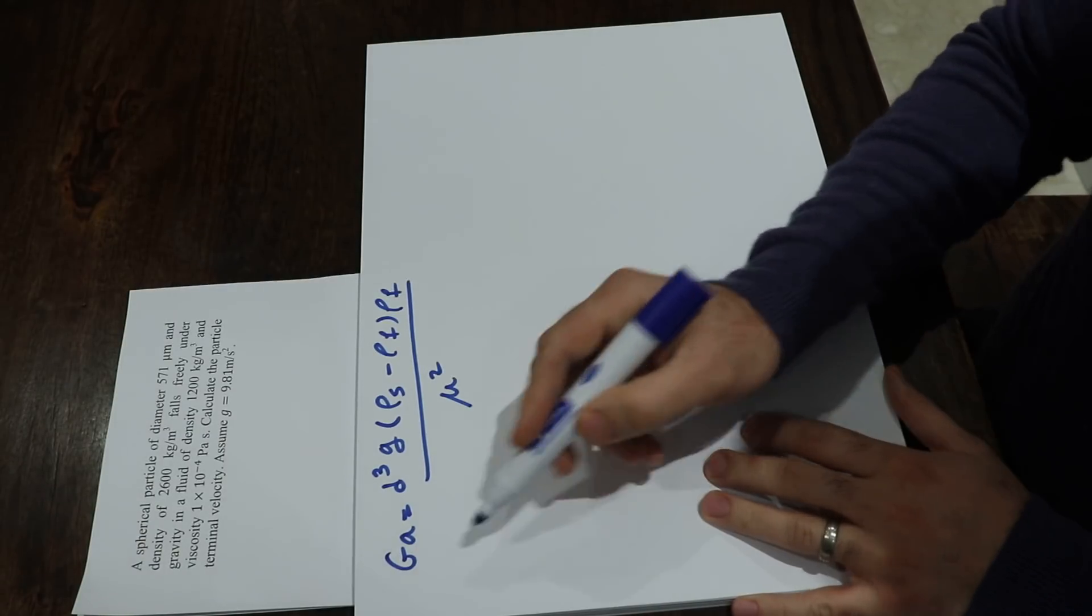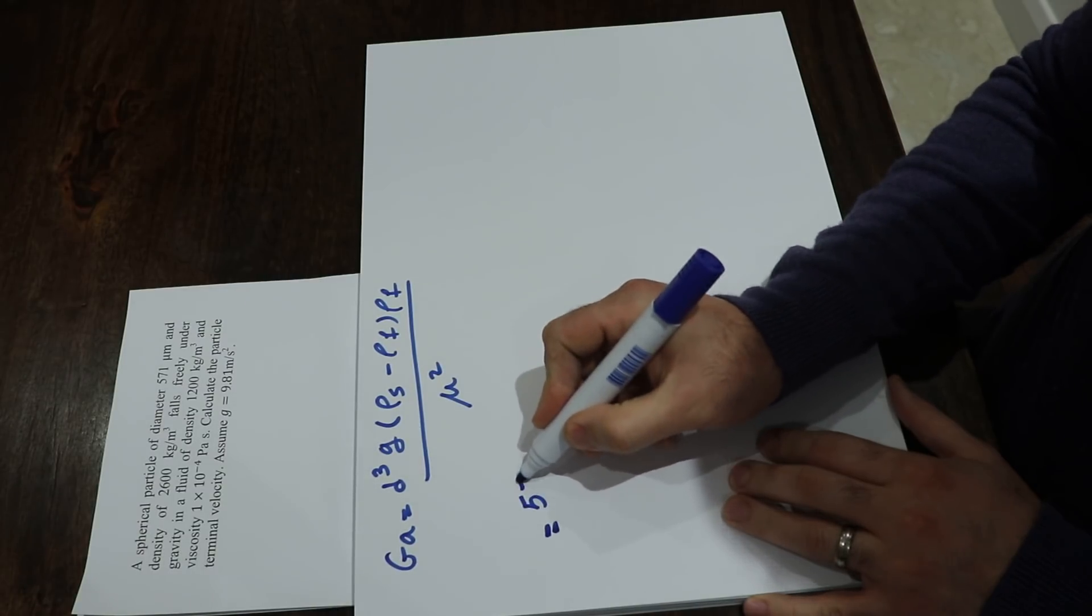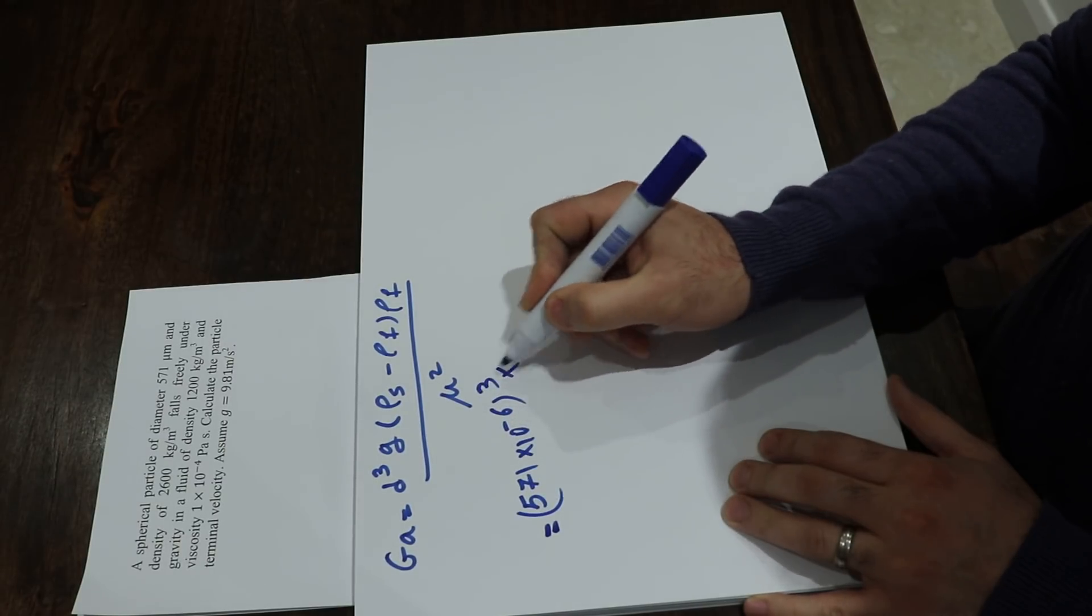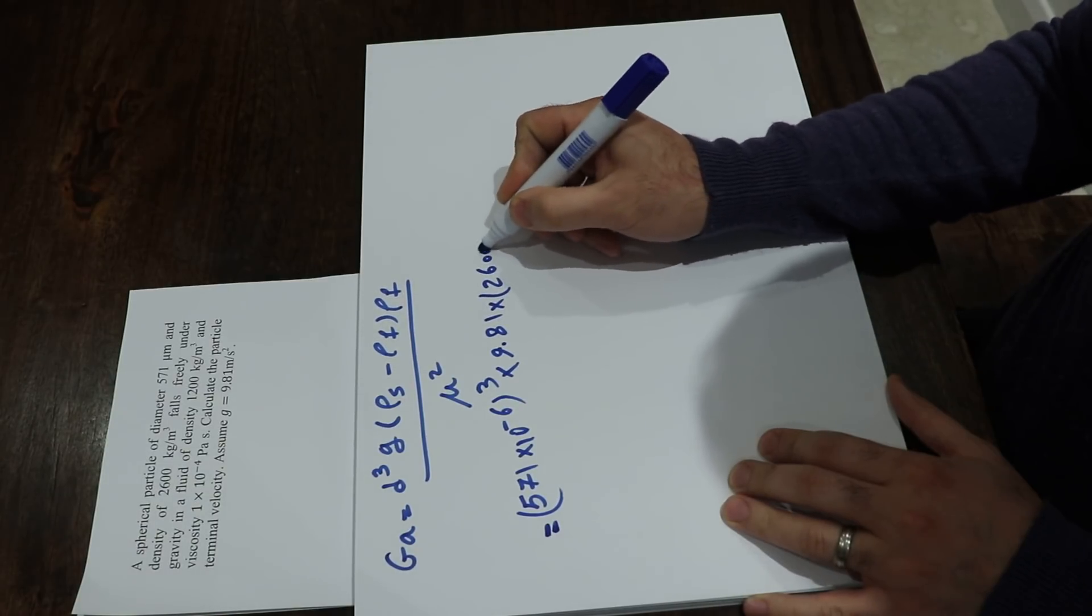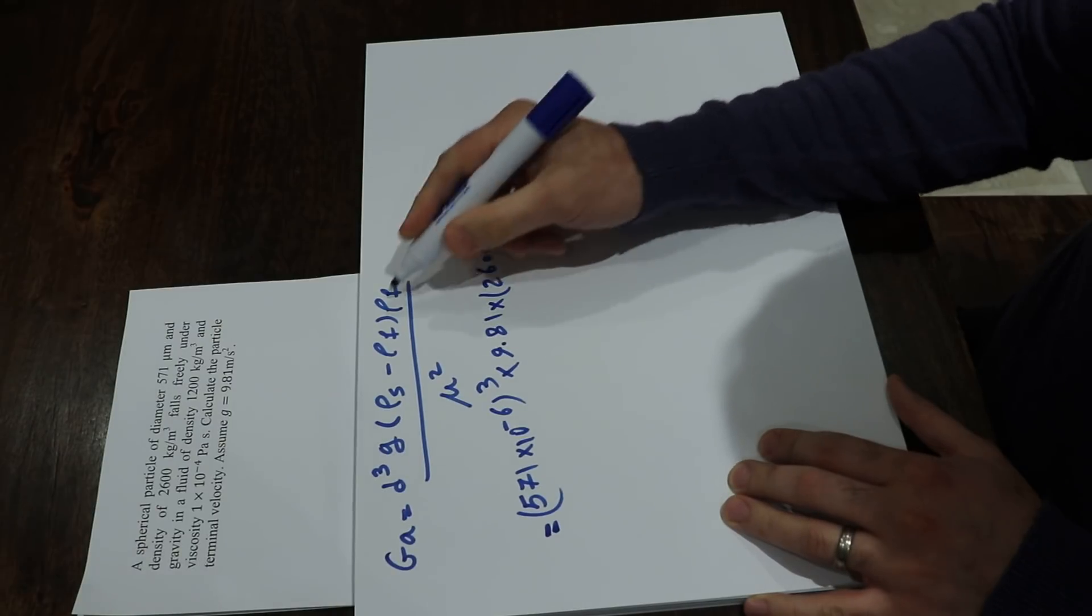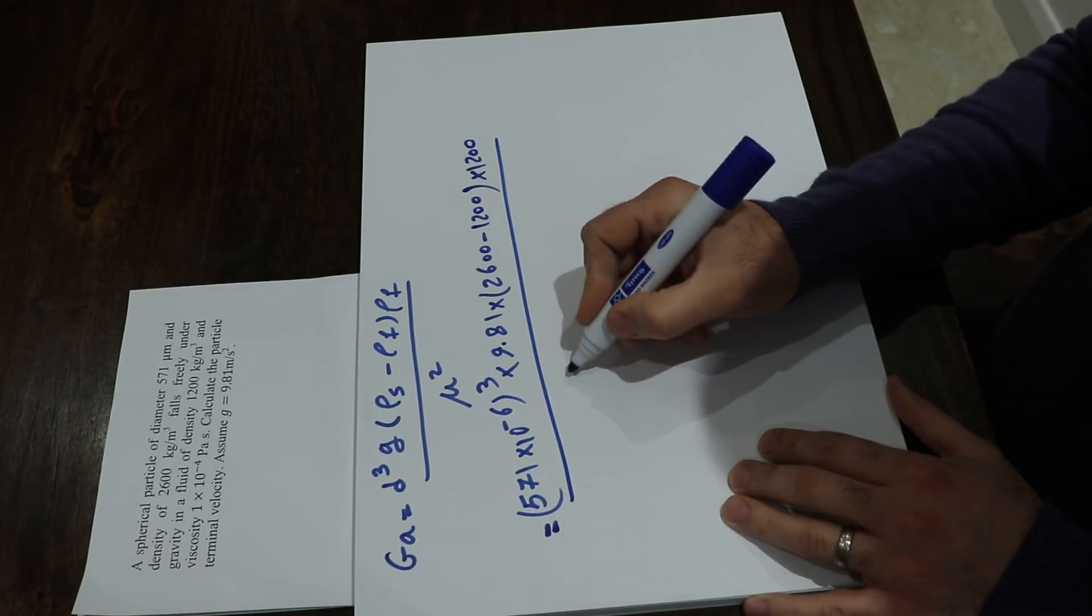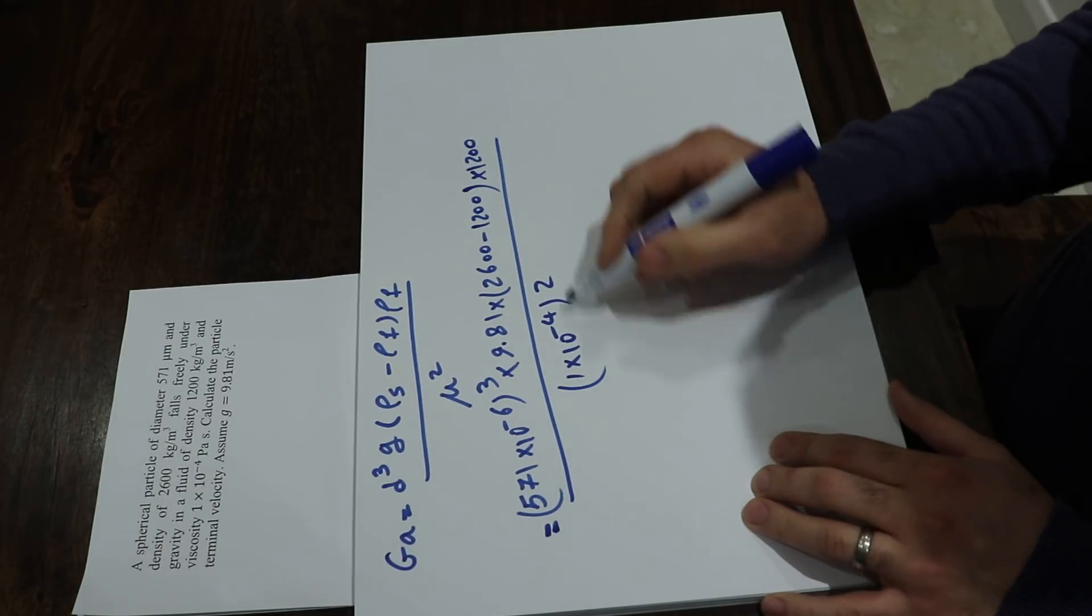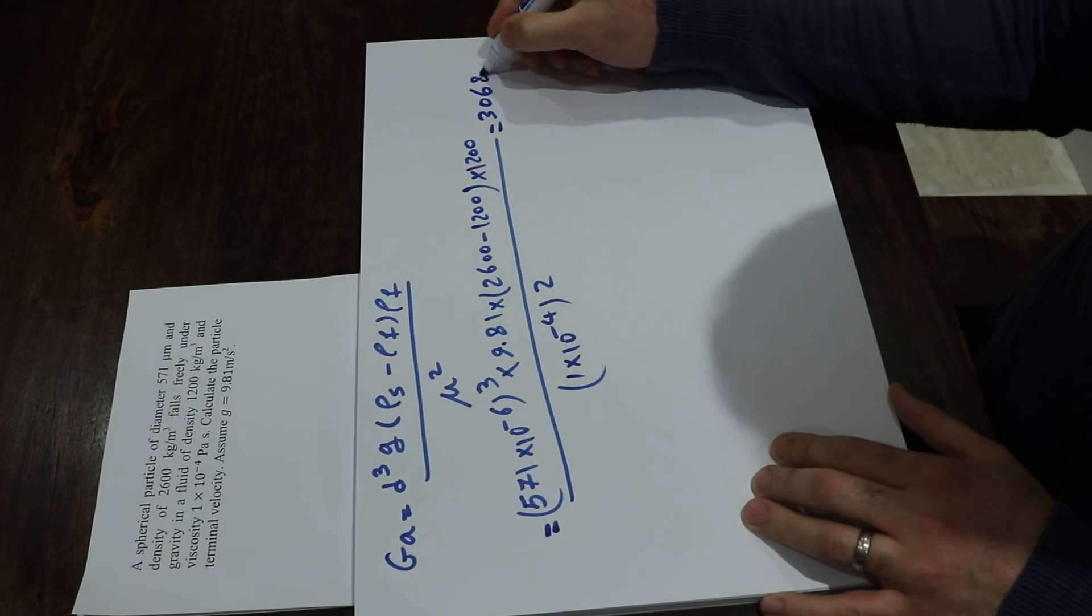The Galileo number will be equal to the particle size 571 times 10 to the minus 6 with the power of 3 times g that is 9.81 times rho s 2600 minus 1200 that is rho f times 1200 divided by mu square that is 1 times 10 to the minus 4 with the power of 2. If you do the calculation here, that will be equal to 306822.